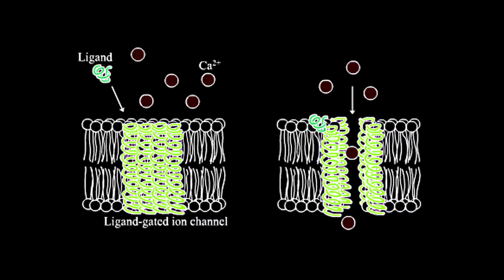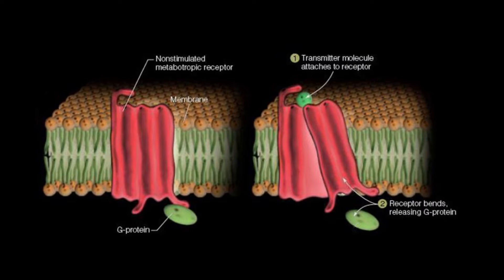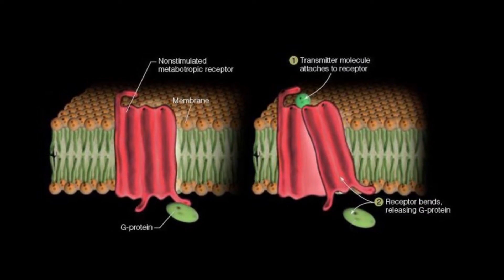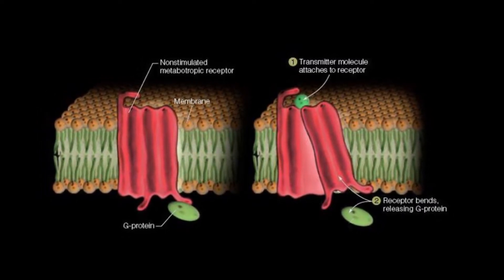On the other hand, metabotropic receptors do not cause an ion influx, but they initiate a number of metabolic steps to modulate cell activity.